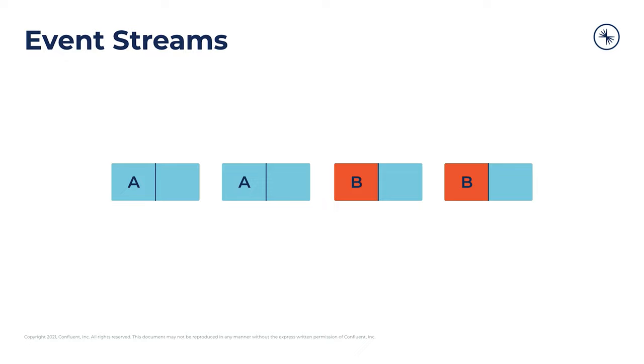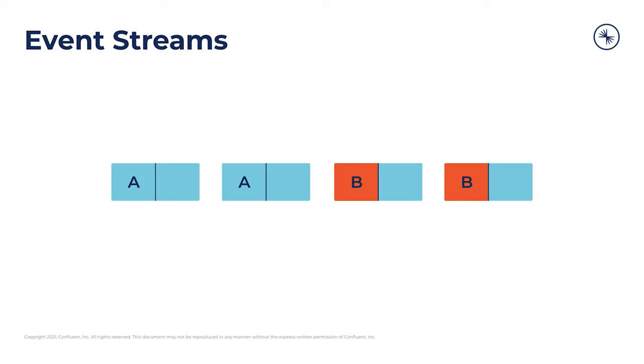Normally in a key-value store, you might think of subsequent records as overwriting the previous record with that same key. Now, the difference is with an event stream, each record is a standalone event. That means that two records with the same key don't really have any relationship to each other. So in this example, we have a total of four events and not just two events in total.